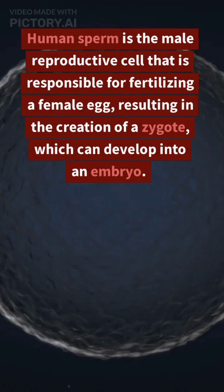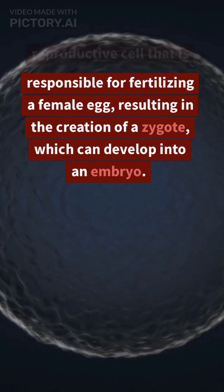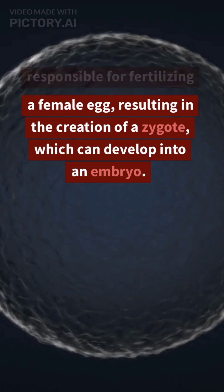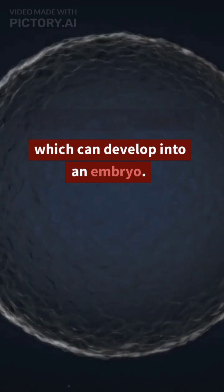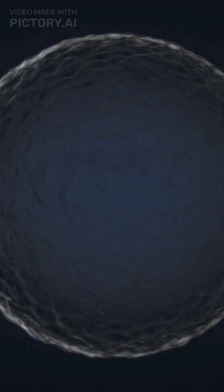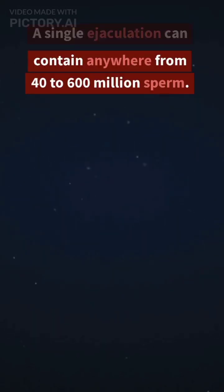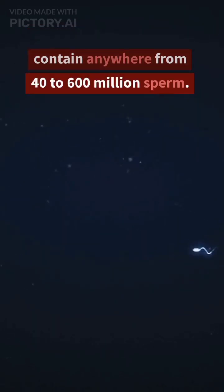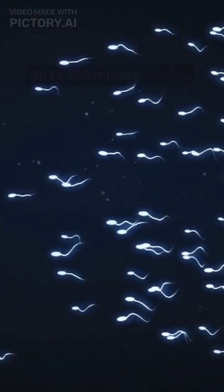Human sperm is the male reproductive cell that is responsible for fertilizing a female egg, resulting in the creation of a zygote, which can develop into an embryo. A single ejaculation can contain anywhere from 40 to 600 million sperm.